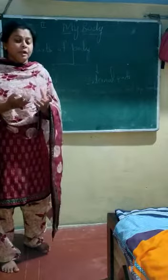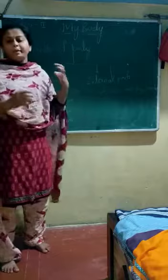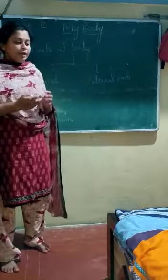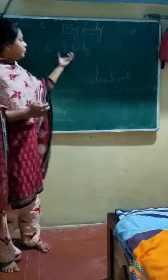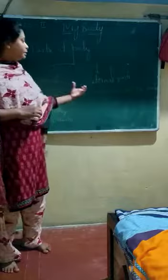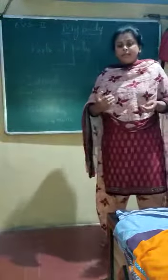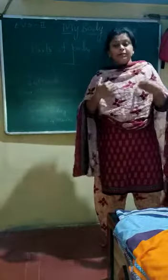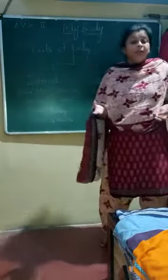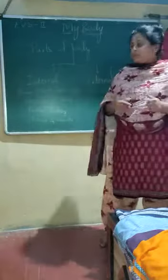Our body is made up of many parts. These parts are divided into two types: one is internal parts and another one is external parts. Internal parts are those inside our body which we cannot see from outside. External parts are those that can be seen very easily.